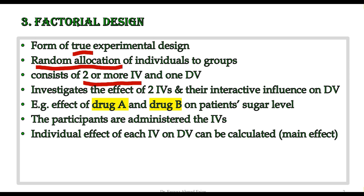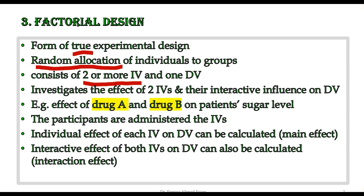Factorial design helps in finding the individual effect of each independent variable on the dependent variable, and this is called the main effect. Because we have two independent variables in factorial design, we can investigate the main effect of the first variable on the DV, and similarly find the main effect of the second variable on the DV.